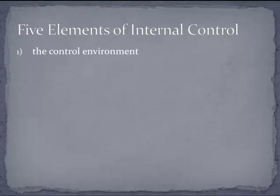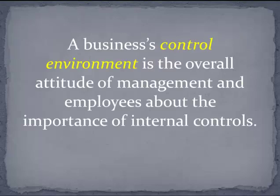The first element is the control environment, which is simply the attitude of management and employees about the importance of internal controls. You can still have accurate information or employees complying even if everybody's attitude is poor toward internal controls, but it's not going to be as effective or as high a probability. When looking at the control environment, we need to see what things are contributing towards an environment that's conducive to safeguarding assets, keeping business information accurate, and complying with laws and regulations.